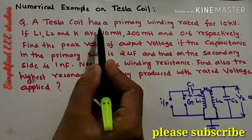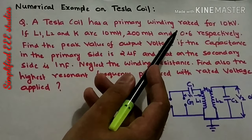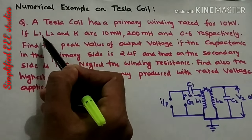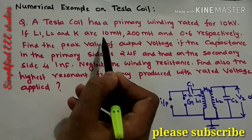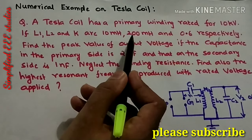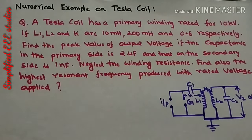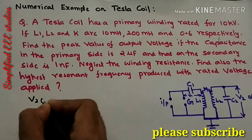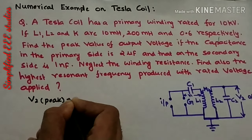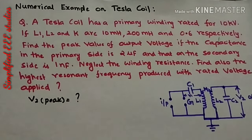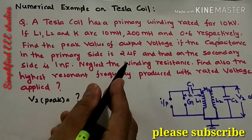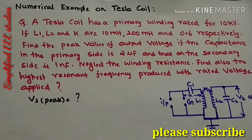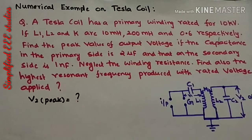A Tesla coil has a primary winding rated for 10 kV. If L1, L2, and K are 10 mH, 200 mH, and 0.6 respectively, find the peak value of output voltage V2 peak. Find the peak value of output voltage if the capacitance on the primary side is 2 microfarad and the capacitance on the secondary side is 1 nanofarad. Neglect the winding resistance.